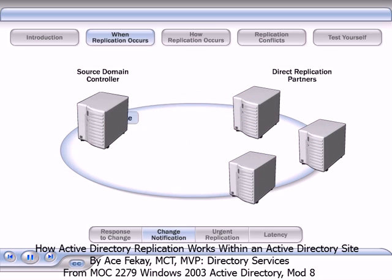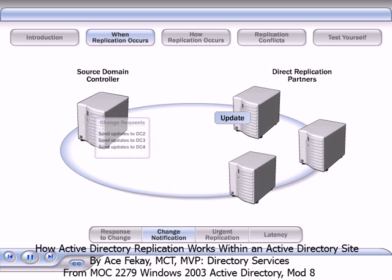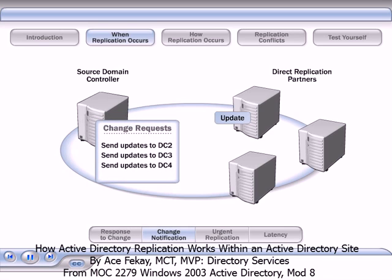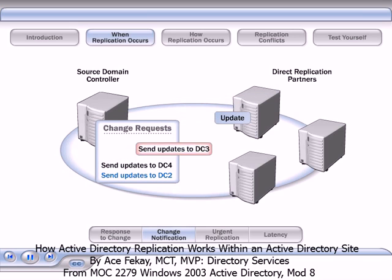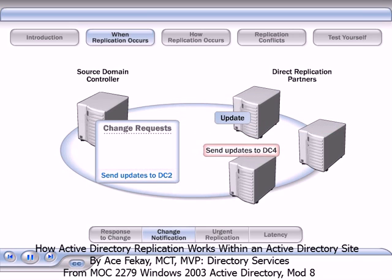The replication partners then request the changes from the source domain controller. The source domain controller either responds to the change request by sending the updated information or, if there are already requests pending, places the request in a queue. Replication requests are processed one at a time until all requests in the queue are processed.